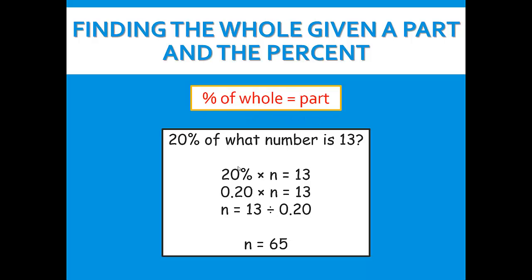For our example we're finding 20 percent of what number is 13. Our percent would be 20 percent; 'of' represents multiplication. What number is the whole, and that's going to be a variable — we're going to use n in this problem. 'Is' stands for our equal sign, and then the part would be 13.